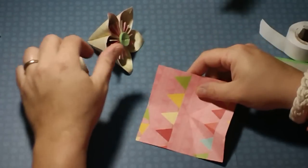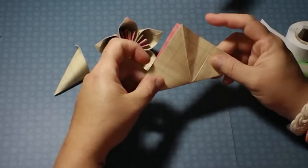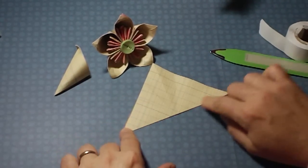We're going to take a four by four square. We're going to fold it in half just like this to make a triangle.